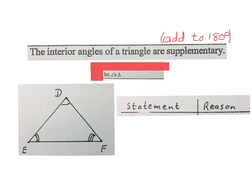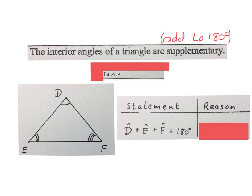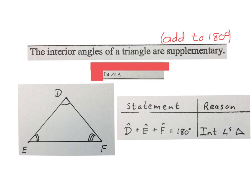When we answer questions in geometry, we write a statement and we give a reason for our statement. In the case of this triangle, we will write: angle D plus angle E plus angle F equals 180 degrees. Our reason: int angles triangle.